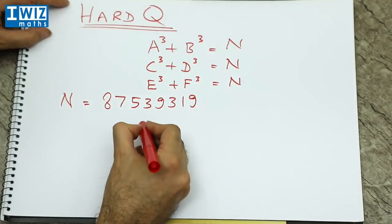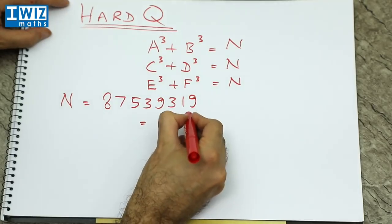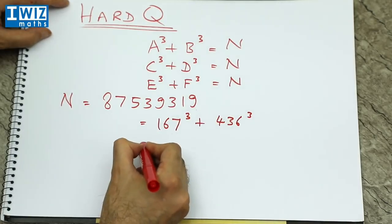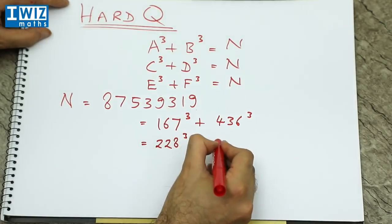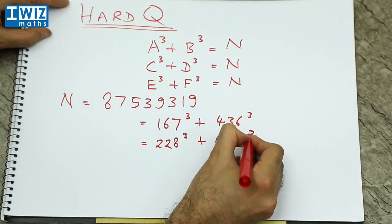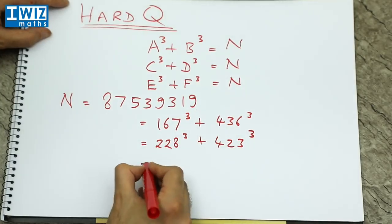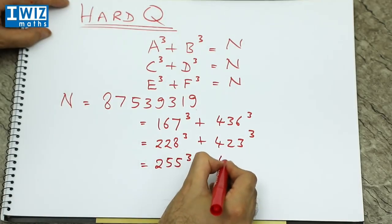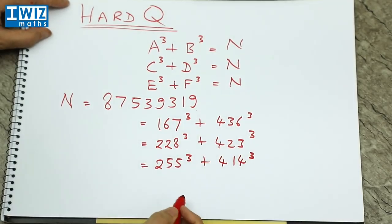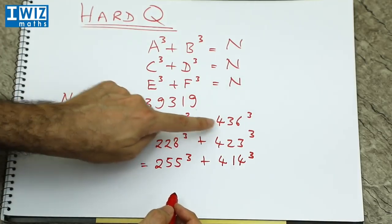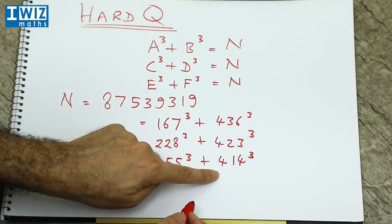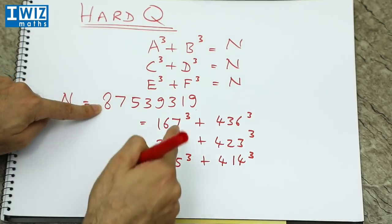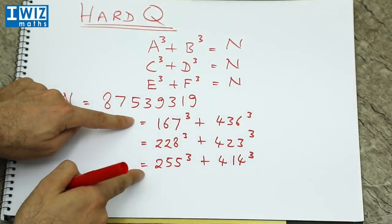This number can be written as 167 cubed plus 436 cubed. It can also be written as 228 cubed plus 423 cubed. And finally it can also be written as 255 cubed plus 414 cubed. So essentially that are your A, B, C, D, E and F and that's your number n. So that number can be written as the sum of two cubes in three different ways.